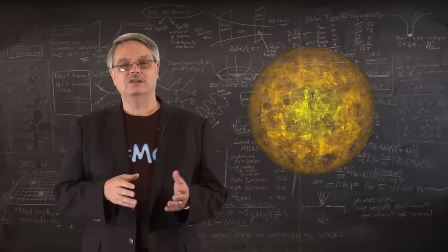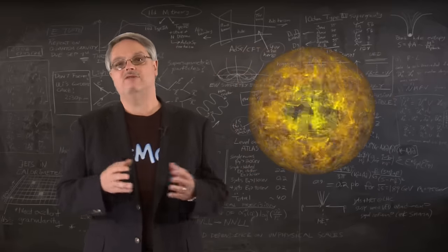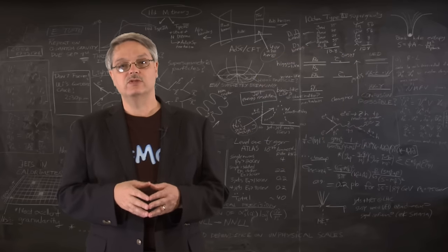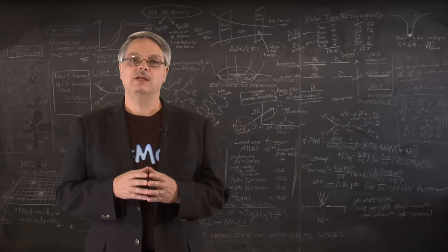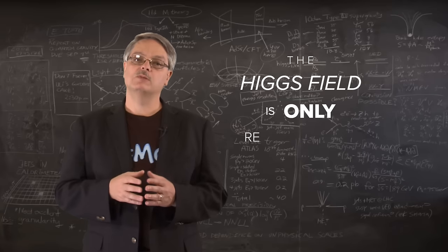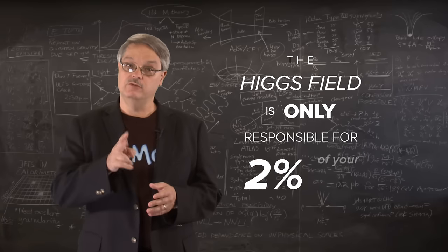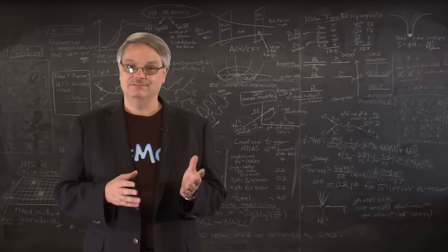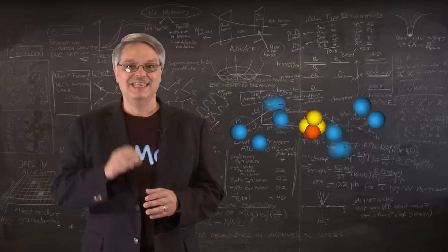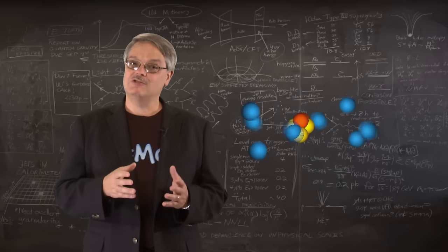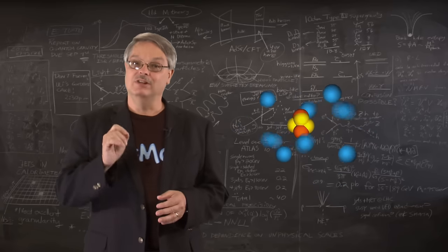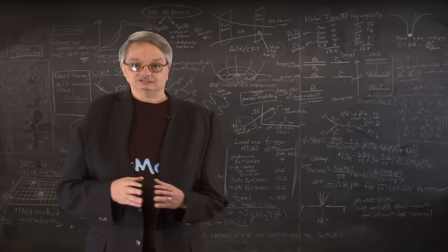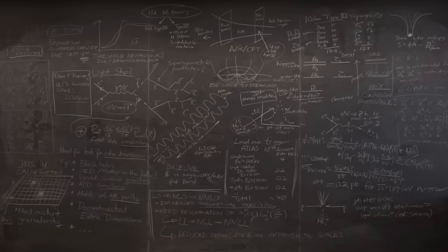So that brings us back to the Higgs field and the Higgs boson. How does that fit in? Well, the Higgs field does give mass to the quarks themselves and the electrons that we've neglected. In short, the Higgs field is only responsible for about 2% of your mass. So does that mean that the Higgs field is unimportant? No, not at all. If it didn't exist, electrons would have no mass. And if electrons didn't have any mass, then atoms wouldn't exist. And then we wouldn't exist and be here to wonder about it. So it matters a lot.